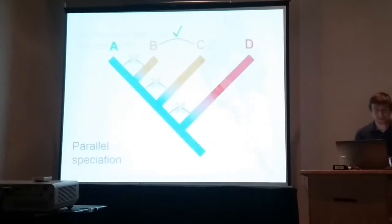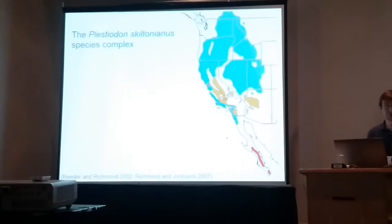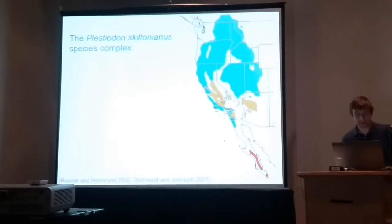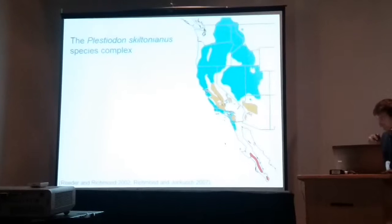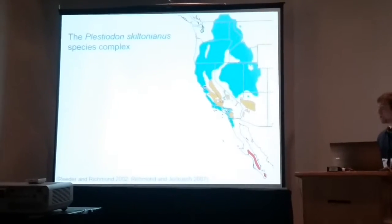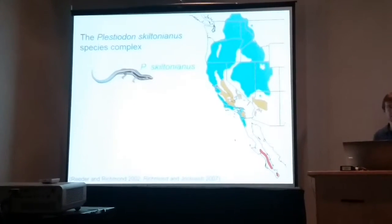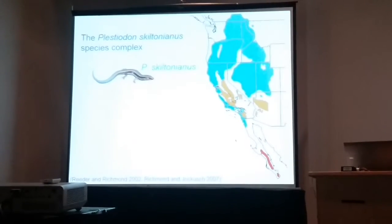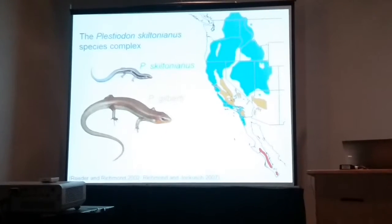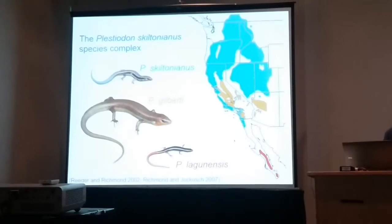The group of species that I work on is called the Plestiodon skiltonianus species complex, a group of skinks located in the western regions of the United States. This complex itself is a putative example of parallel speciation. The complex is made up of three different species: a small-bodied Plestiodon skiltonianus, a much larger-bodied Plestiodon gilberti, and another small-bodied skink, Plestiodon lagunensis, which is endemic to Baja California.